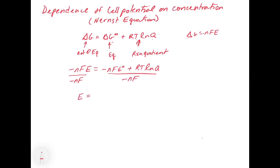We get E, because the nF cancels, equals E naught. Then we have to flip the sign because we're dividing by a negative, giving us minus RT over nF times ln(Q). This is the so-called Nernst equation.